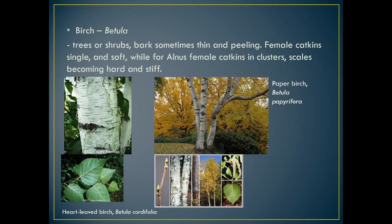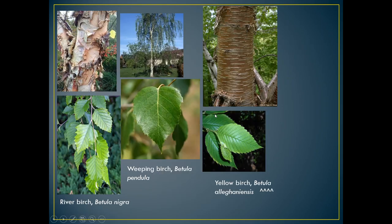The first genus in this family is the birch genus, Betula. They're trees or shrubs characterized by that distinctive bark — often white, flaky, and paper-like. The female catkins tend to be softer and single. Here you can see the teeth along the leaf edge and the shape, and again that distinctive bark — this is a paper birch. We also have the river birch, the weeping birch, and the yellow birch. The yellow birch is an example of a birch that doesn't have white bark, so when distinguishing between individual species there are other things to take into consideration beyond just the bark.